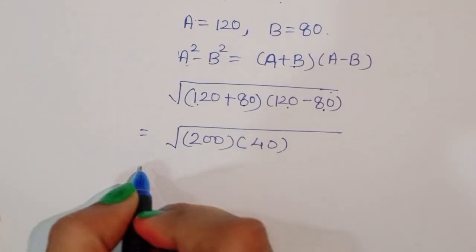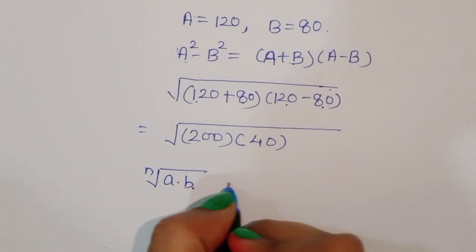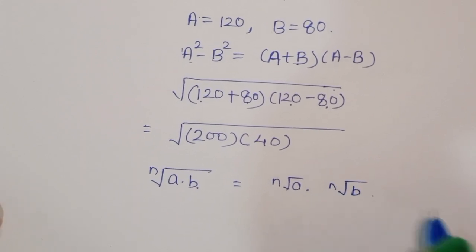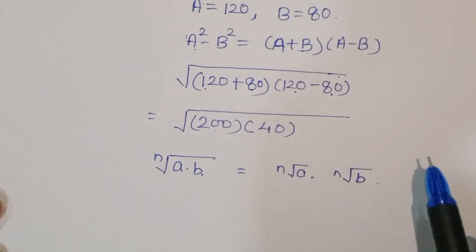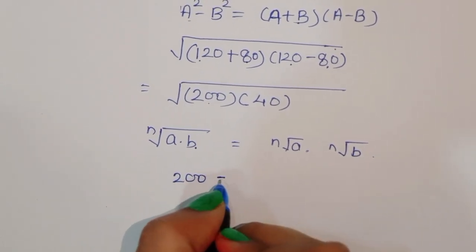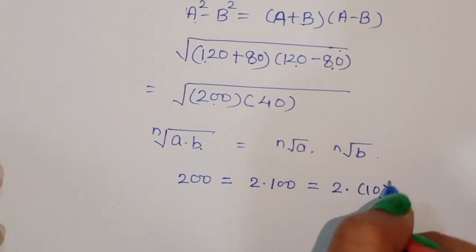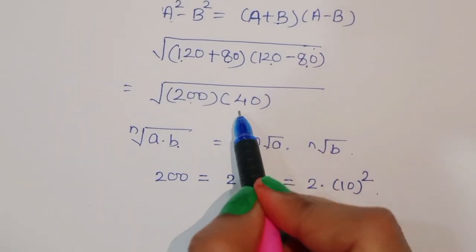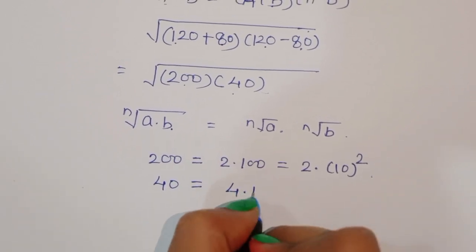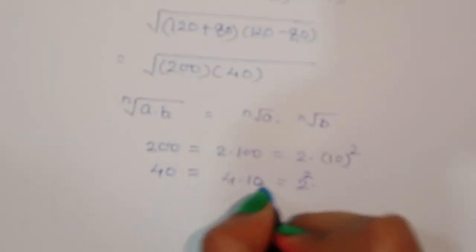Now, using the formula that the square root of A times B equals the square root of A times the square root of B, we first solve 200: 200 equals 2 times 100, which equals 2 times 10 squared. And 40 equals 4 times 10, which equals 2 squared times 10.